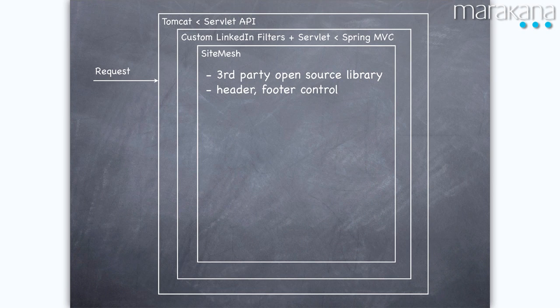Then the request hits a third-party open source library called SiteMesh. SiteMesh is a really neat piece of software — it takes HTML and turns it into an object, on which you can access the header, body, and footer. You can then merge the head of that HTML content with another head. This was the key for us to get control over our Chrome — which loads our JavaScript, CSS, sets the title. We use SiteMesh to add JavaScript, add CSS, and change the title of the page.